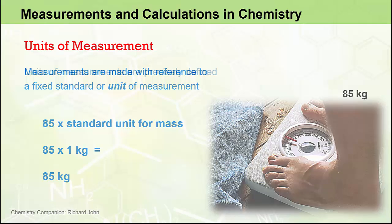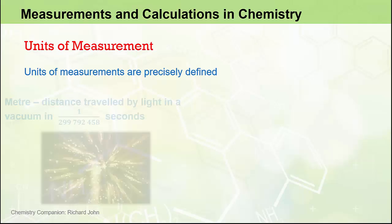Now, these units of measurements, the m and the kg, are precisely defined. For example, the meter is precisely defined as the distance travelled by light in a vacuum in that many seconds, 1 over 299,792,458 seconds.